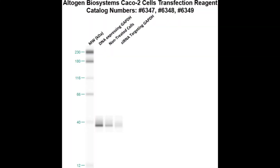Here is a Western blot validation of our transfection reagents. CaCO2 cells were transfected with either GAPDH DNA, which resulted in overexpression compared to non-treated cells, or GAPDH siRNA, which resulted in partial silencing.